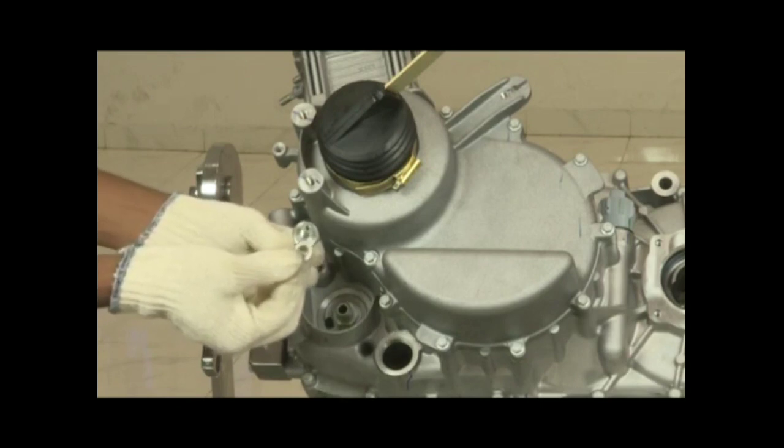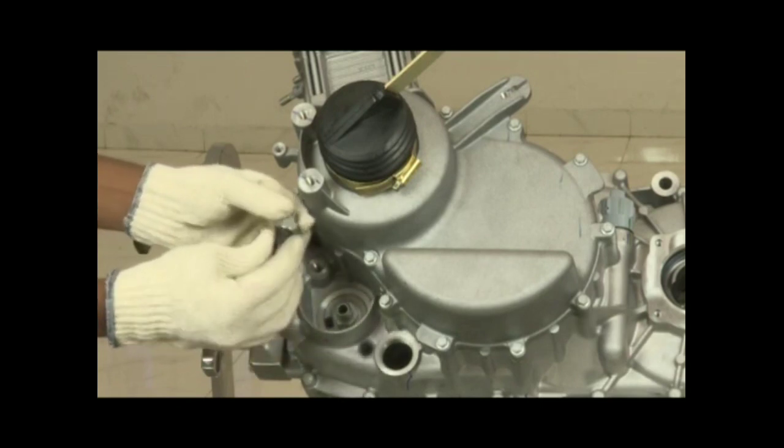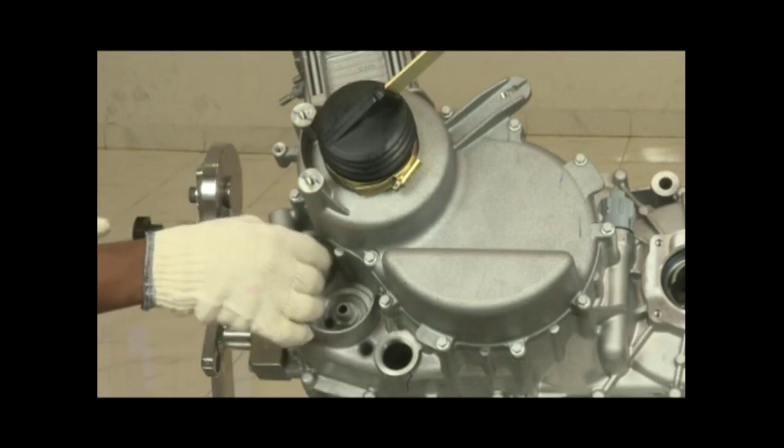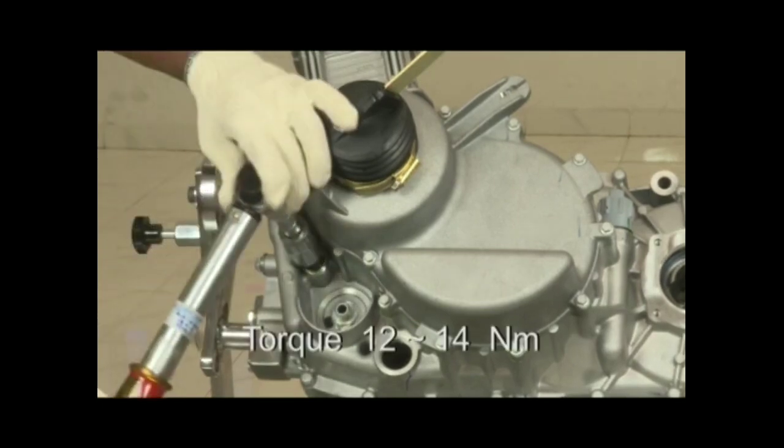Oil pressure switch fitment. Place the aluminium washer into the switch. Tighten the switch. Apply torque.